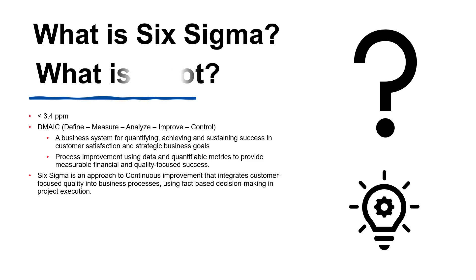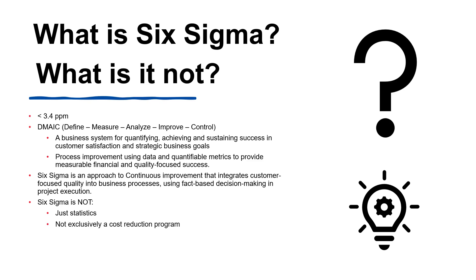So what is Six Sigma not? Six Sigma is not just a statistic — statistics is a tool, not an end in itself. It is not exclusively a cost reduction program; cost reduction is just one aspect of the Six Sigma approach. And it is not a rigid mechanical approach — Six Sigma is flexible and can adjust to your needs.